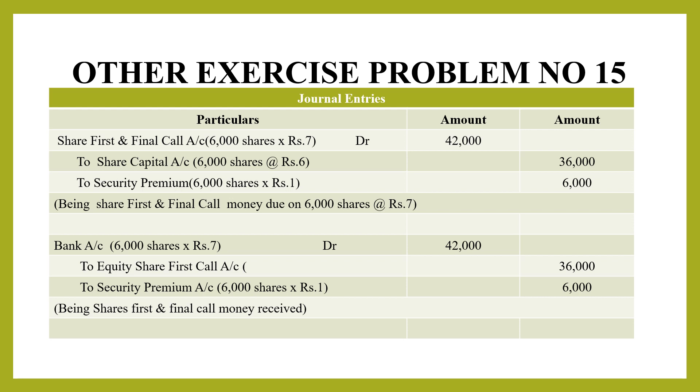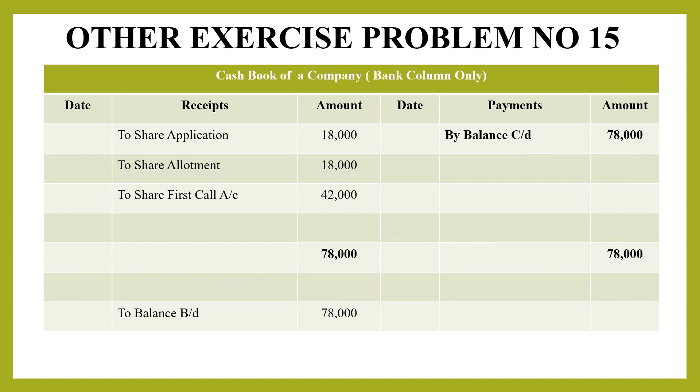Next, we prepare the Cash Book — specifically the bank column. There are only receipts here, no payments mentioned. Share Application money: 18,000. Share Allotment money: 18,000. Share First and Final Call: 42,000. The total of all receipts is 78,000 rupees. This is balanced on the payment side as Balance Carried Down 78,000, and brought down as Balance Brought Down 78,000 — grand total on both sides is 78,000.